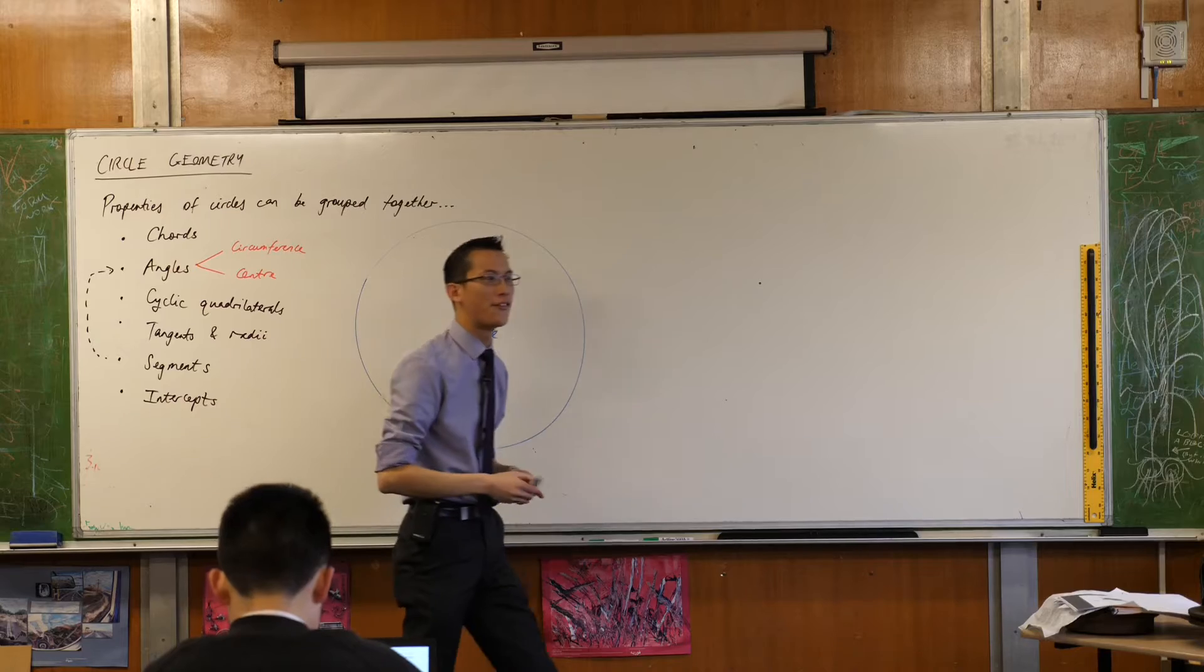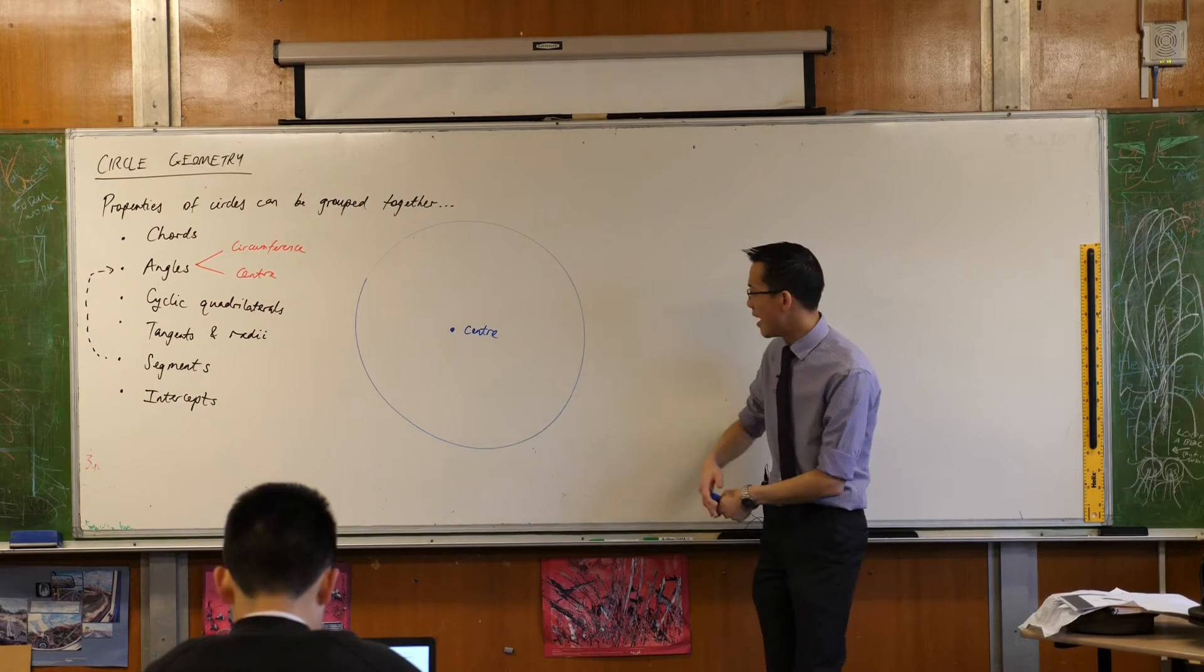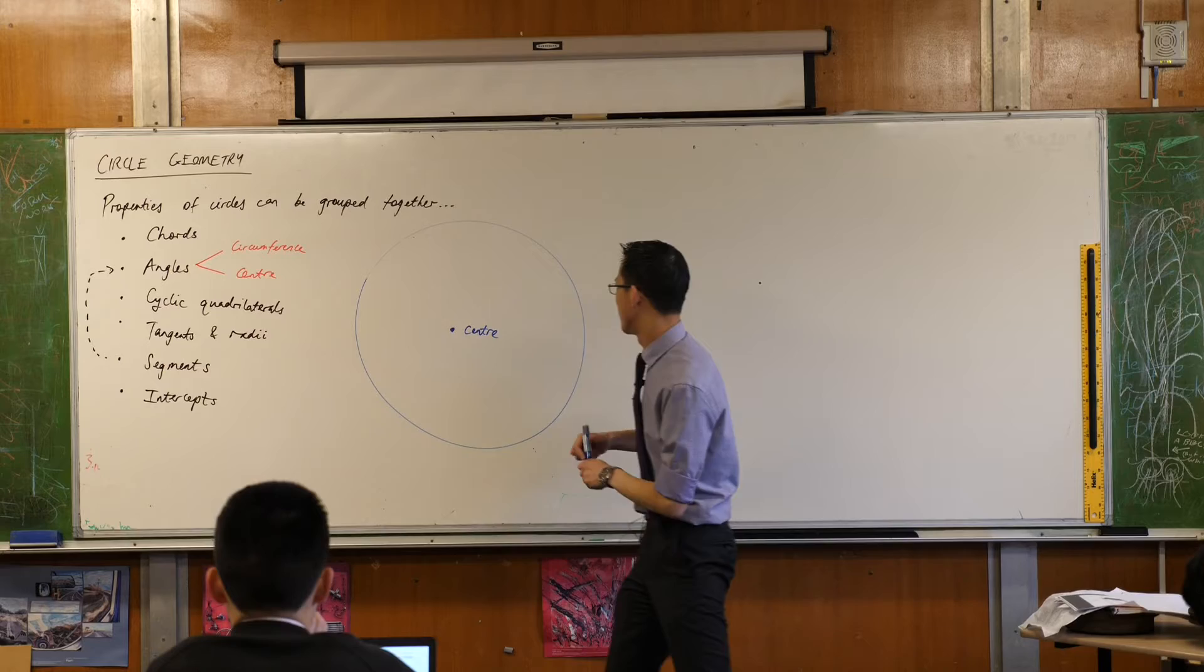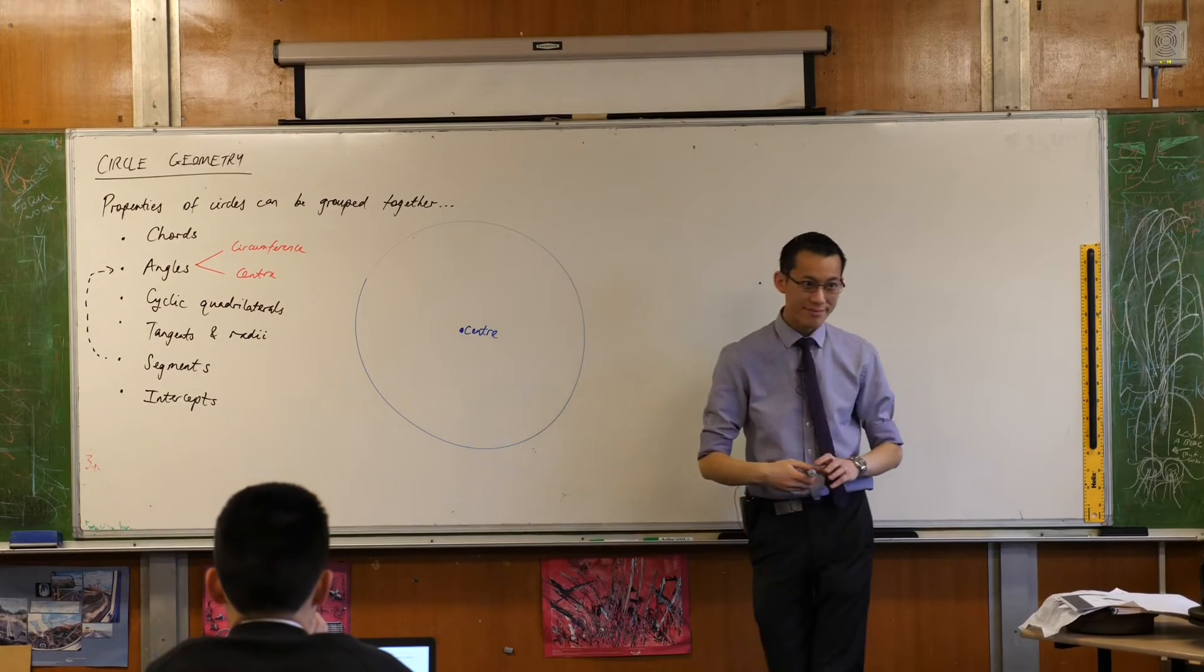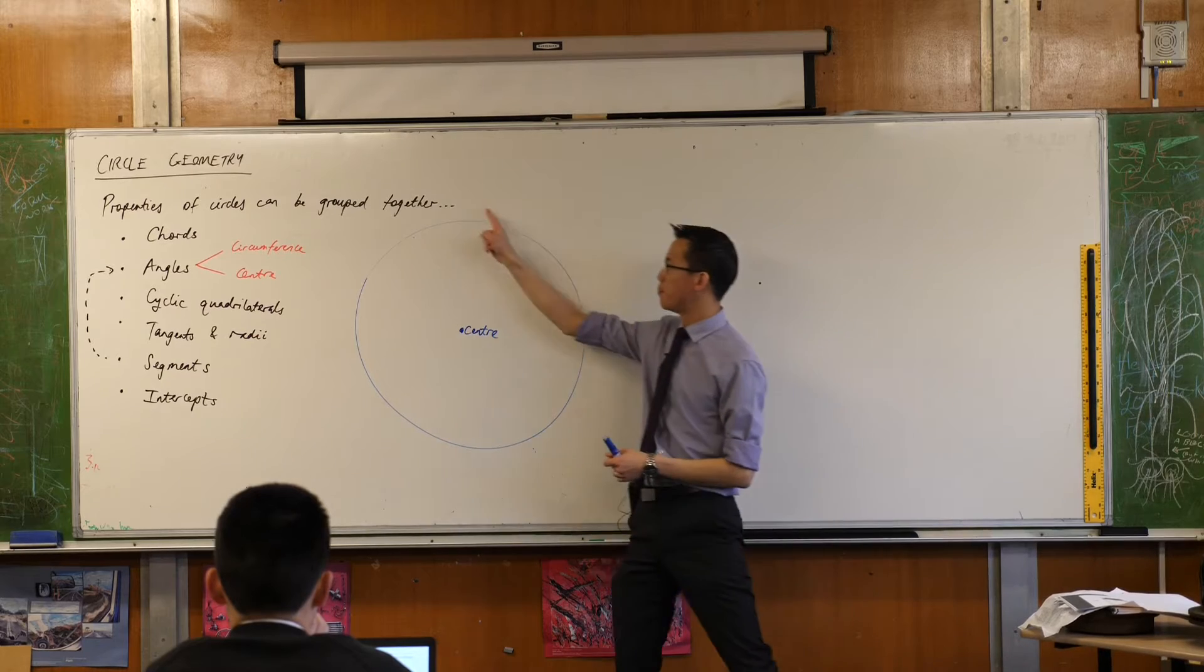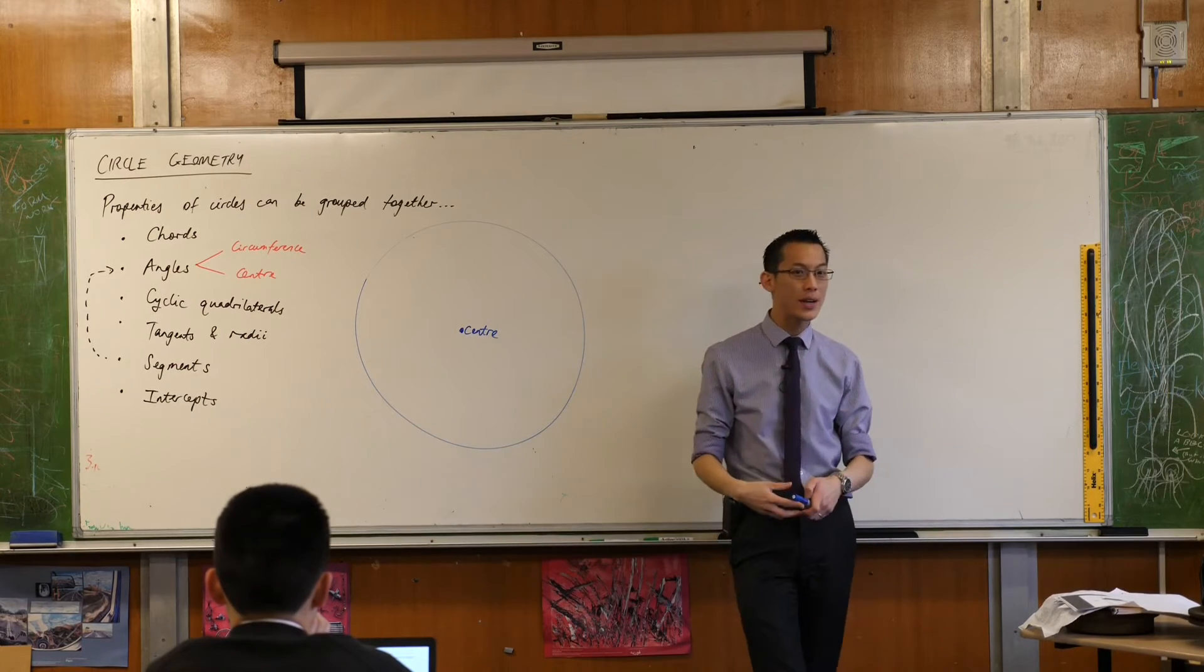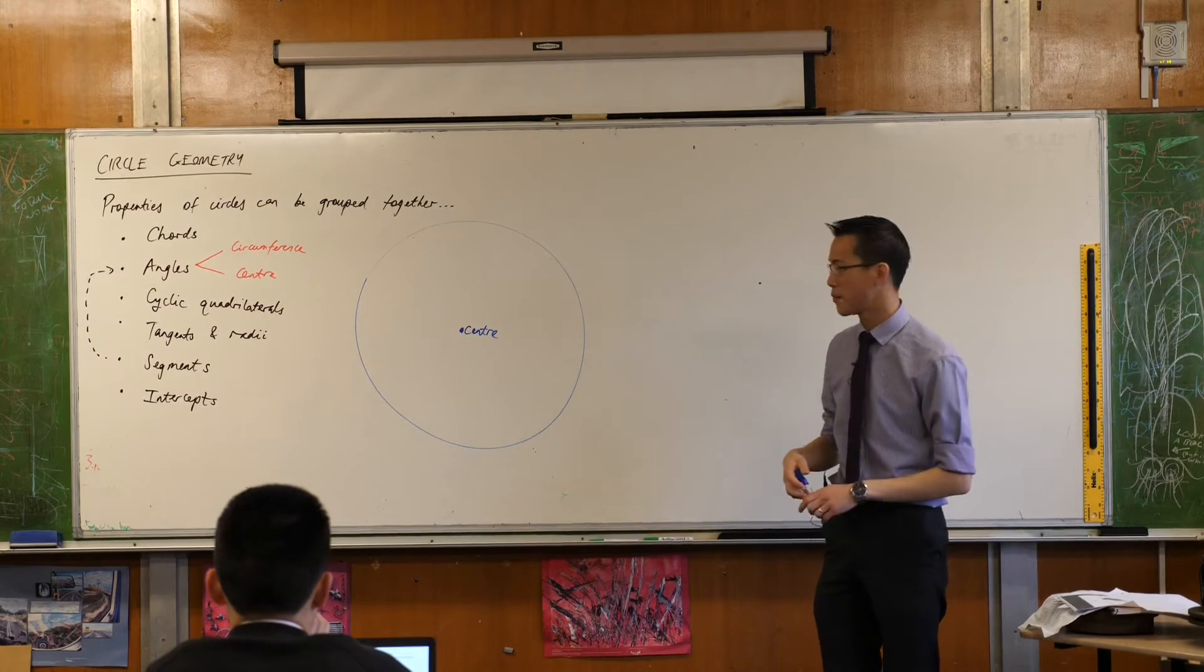So the center defines the circle. You've got a point, and then you've got all of these points out here which are equidistant from the center, and that's what comprises your circle.